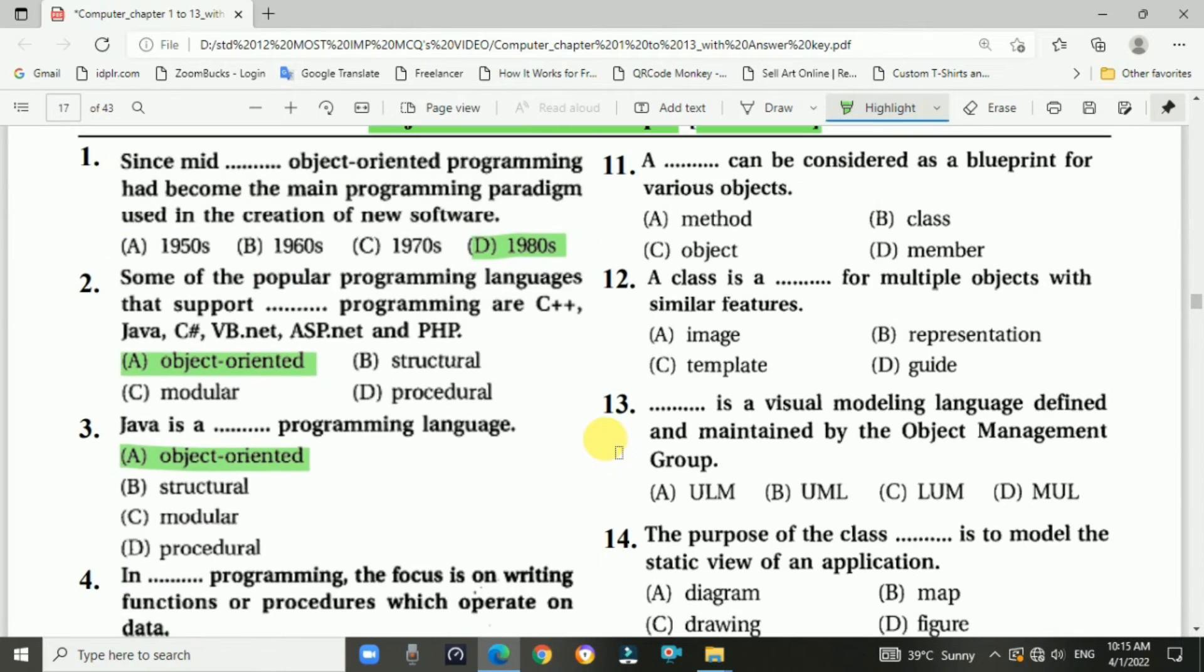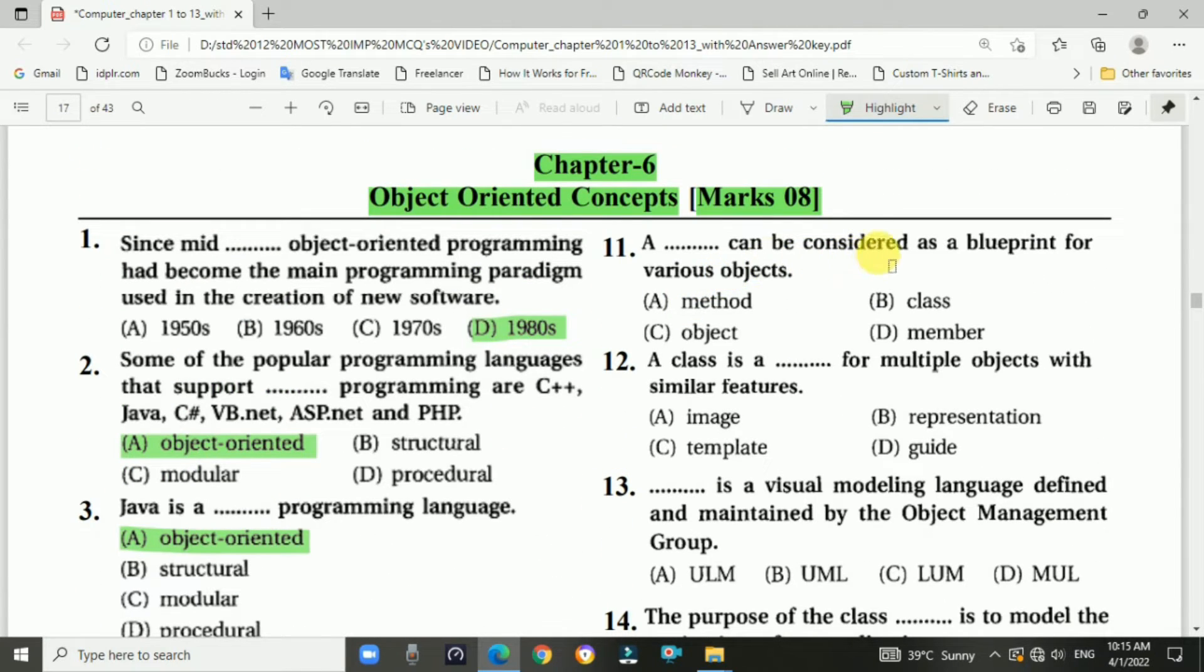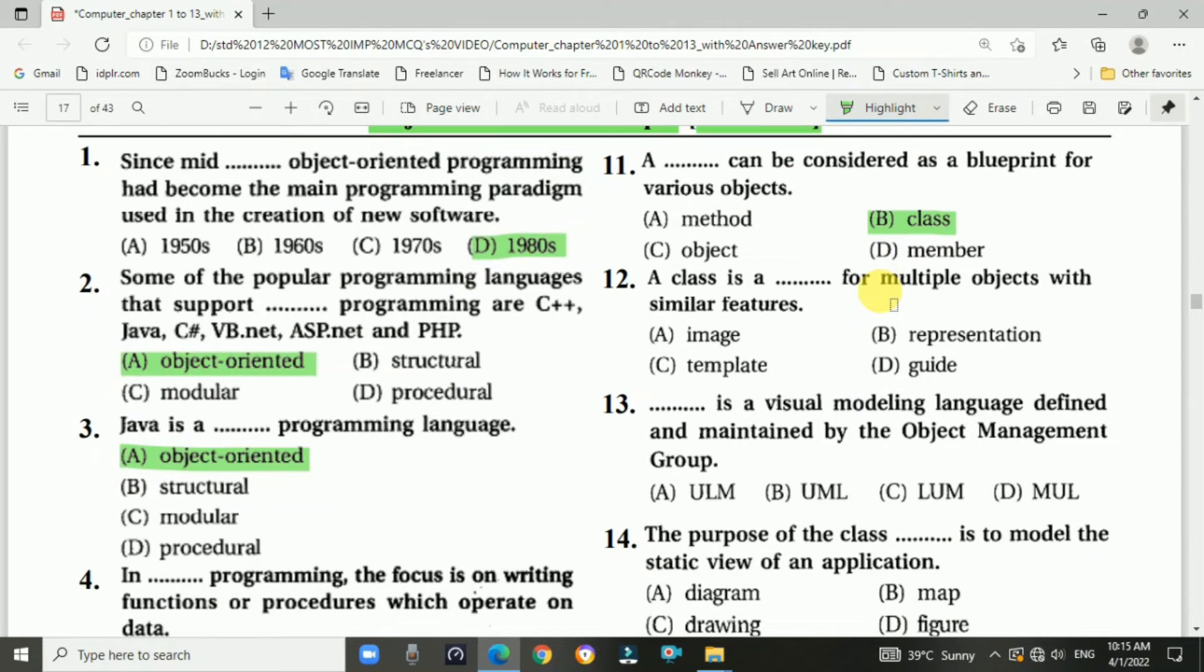Question number eleven: Blank can be considered as a blueprint for various objects. Answer is B, class. Question number twelve: A class is blank for multiple objects with similar features. Answer is C, template.